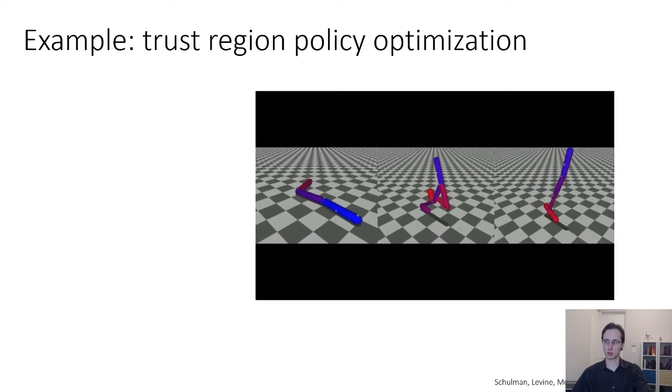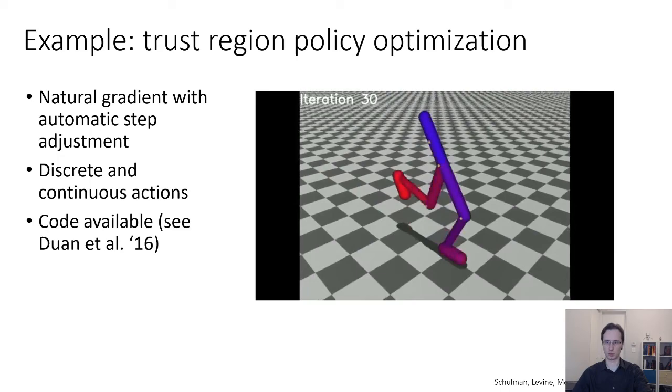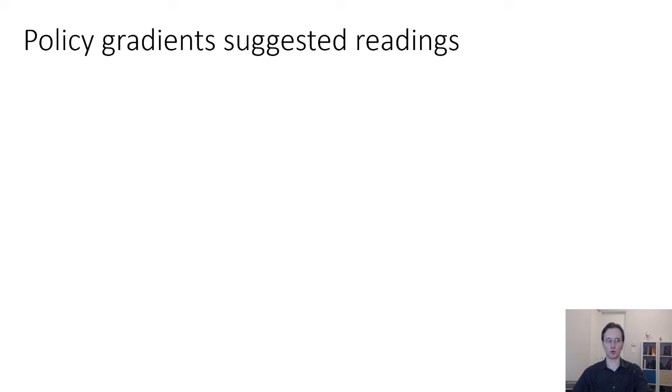Here are some videos from the Trust Region Policy Optimization paper. So this paper used a natural gradient with automatic step size adjustment with both continuous and discrete actions. And there was some code available for this if you want to check that out from a paper from 2016 by Rocky Dwan.